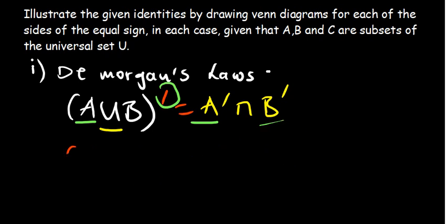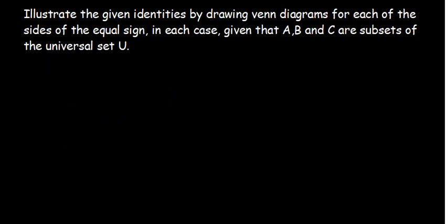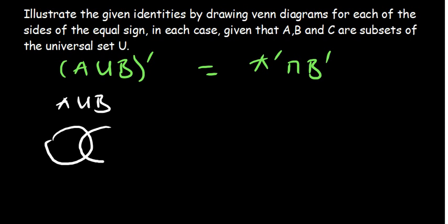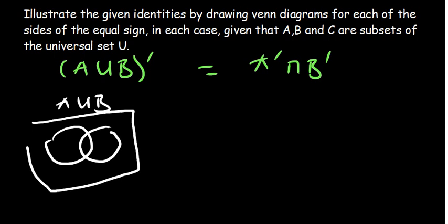How do we get to illustrate the given identities? First is by drawing the Venn diagrams. We start with the first De Morgan's law: A union B complement is equivalent to A complement intersection B complement. I'll start with the left hand side. When we say A union B complement, it requires us to shade the region outside the union. I'll start by drawing A union B itself. A union B requires that you shade the region of A and B.